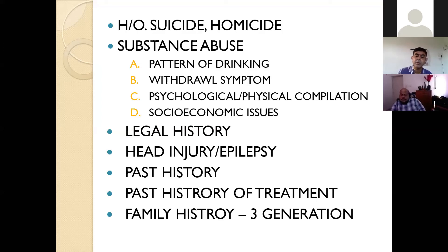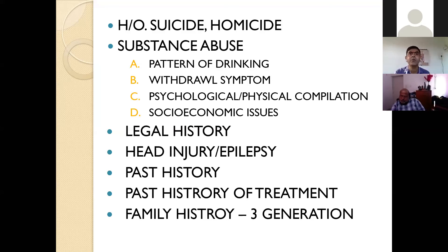For family history, always cover three generations — a pedigree chart is useful. In our culture, patients often cannot describe the maternal side well, and may not appreciate the significance of genetic loading. Be specific: ask about siblings and at least three generations on both maternal and paternal sides.